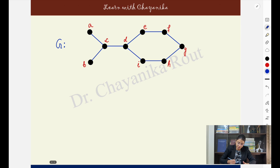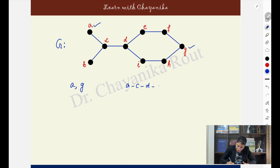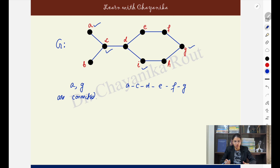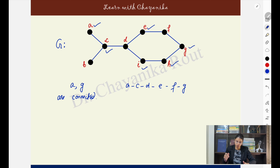In this particular graph, if I talk about the vertices a and g, you can go from a to g through the path a-c-d-e-f-g, and there are other paths also. The existence of a path between two vertices means the vertices are connected. Vertices c and i are connected, and vertices e and h are also connected because we can find paths between those pairs.